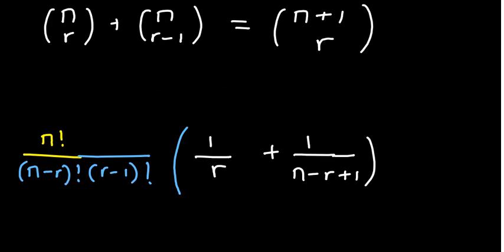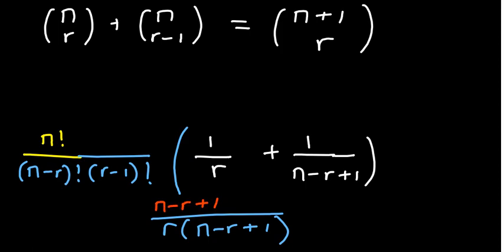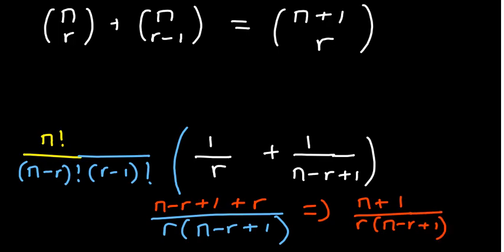So we need to simplify what is in the brackets by finding a common denominator. The common denominator of r and n minus r plus 1 is r times n minus r plus 1. Combining gives us n minus r plus 1 plus r on top, and the r cancels, so we remain with n plus 1 on top.